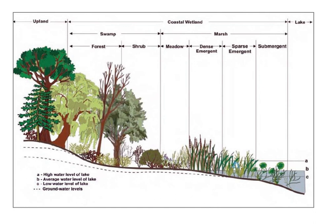Playa lakes are a form of shallow freshwater marsh that occurs in the southern high plains of the United States. Like vernal pools, they are only present at certain times of the year and generally have a circular shape. As the playa dries during the summer, conspicuous plant zonation develops along the shoreline.